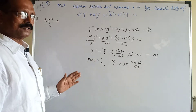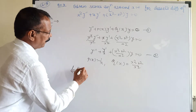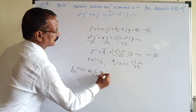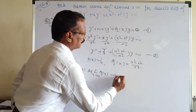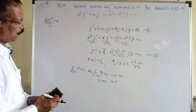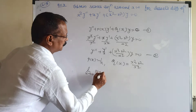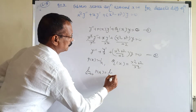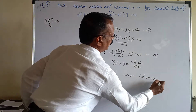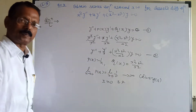The condition for a singular point: if lim(x→0) P(x) or lim(x→0) Q(x) diverges, then x = 0 is a singular point. Since lim(x→0) P(x) = lim(x→0) 1/x = infinity, P(x) diverges. So x = 0 is a singular point of the given differential equation.